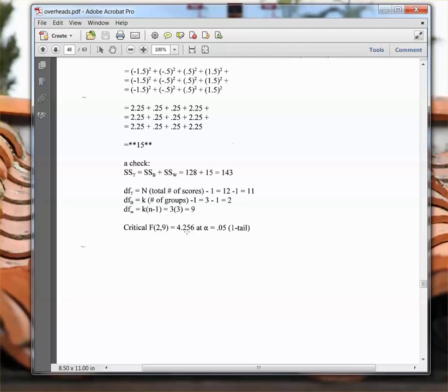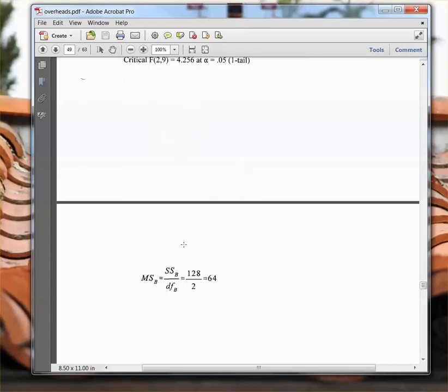So we can go ahead and look up our critical F here. And the critical F with 2 between and 9 degrees of freedom is 4.256. So that's the critical F that we have to exceed in order to reject the null hypothesis. So we're almost done.